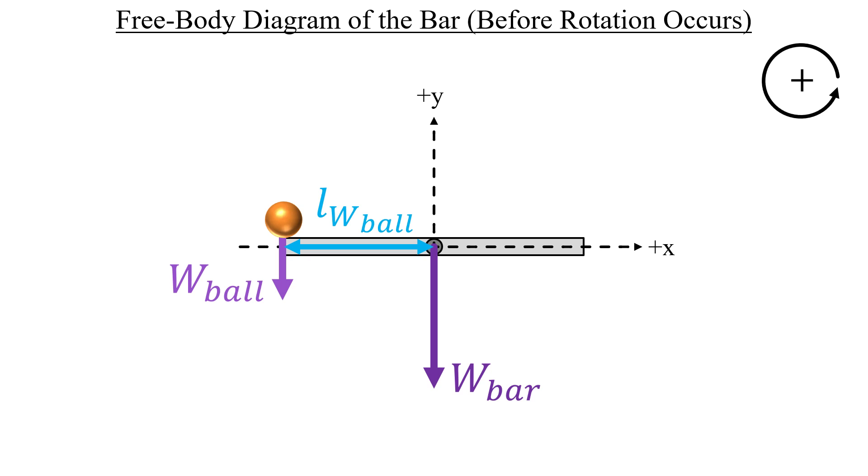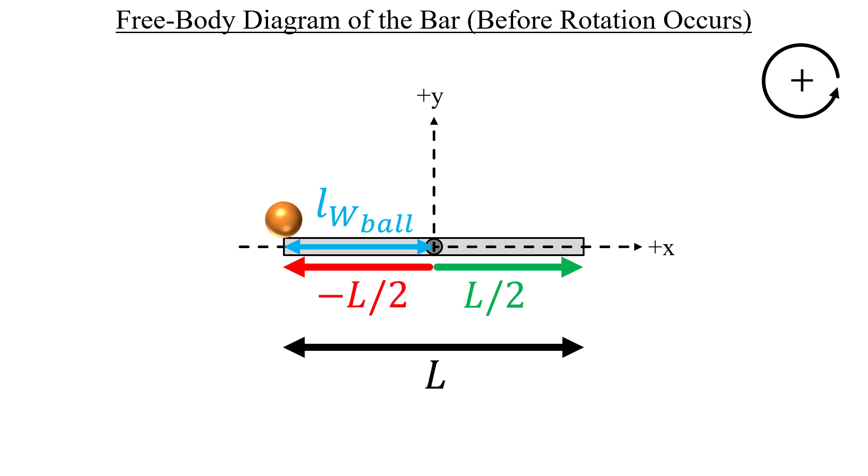There's one more thing that we should do here before moving on. Let's try and find a way to define this lever arm in terms of a quantity that we know. I'll refer to the entire length of the bar as capital L. Measured from the center of the bar where x equals zero, half of the bar sticks out in the positive direction and the other half in the negative direction. Notice that the negative length in red is the same length as the lever arm above it. Thus, we can say that the lever arm is equal to negative L divided by 2.